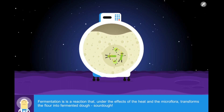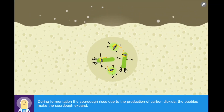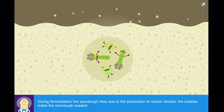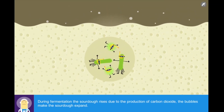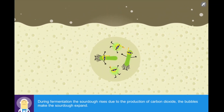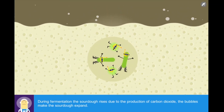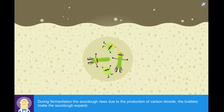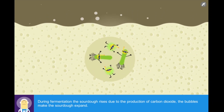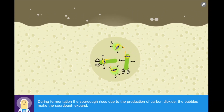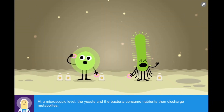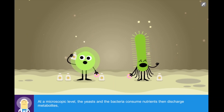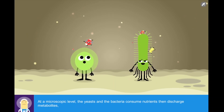During fermentation, the sourdough rises due to the production of carbon dioxide. The bubbles make the sourdough expand. At a microscopic level, the yeasts and the bacteria consume nutrients, then discharge metabolites.